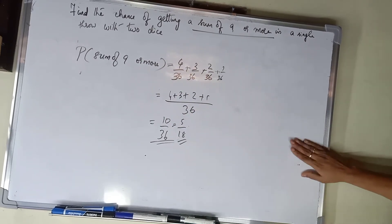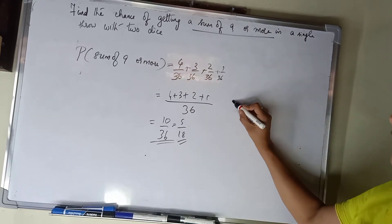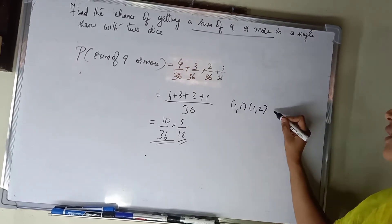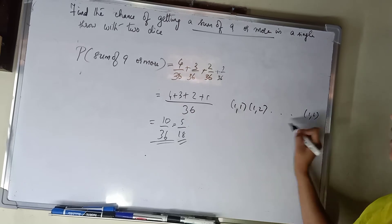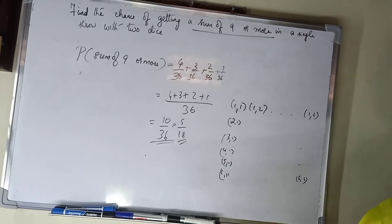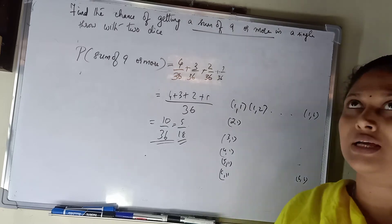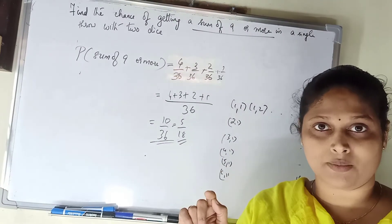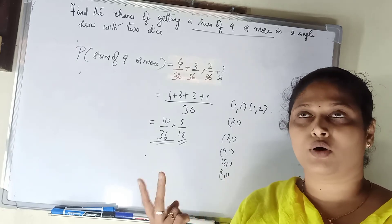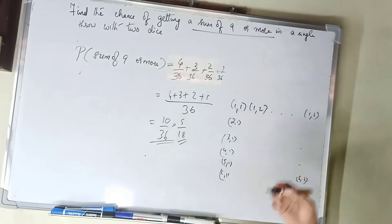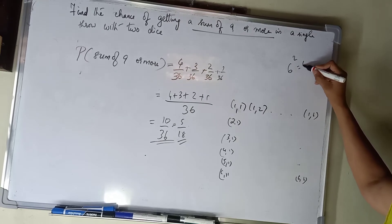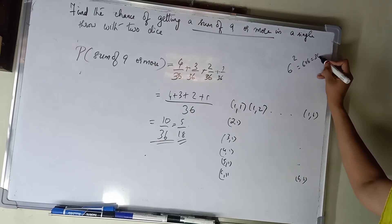If you choose two dice, what options are available? You can get (1,1), (1,2), (1,3) through (1,6), and (2,1), (2,2), and so on. One die has 6 outcomes, so for 2 dice it is 6 raised to 2, which is 6 squared, that is 6 into 6 equals 36 total outcomes.